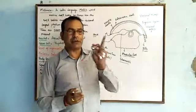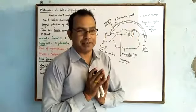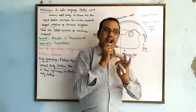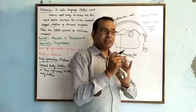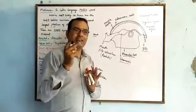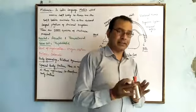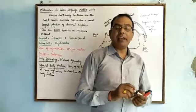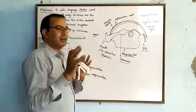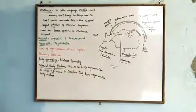Fertilization is internal. Both types of development can take place: dioecious forms like octopus, Loligo, sepia, and apple snail undergo direct development, but Aplysia and Turris undergo indirect development. Females lay eggs, so these are oviparous animals.